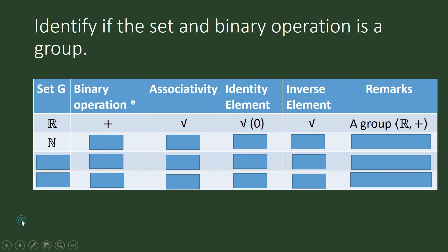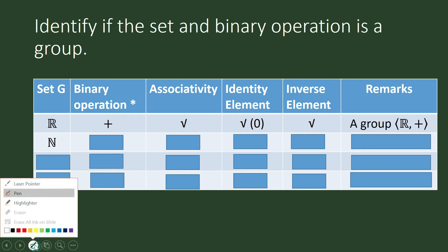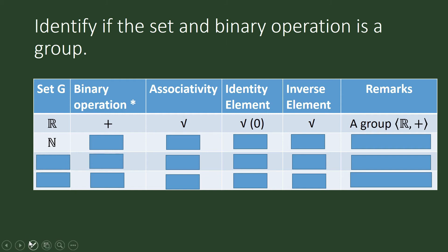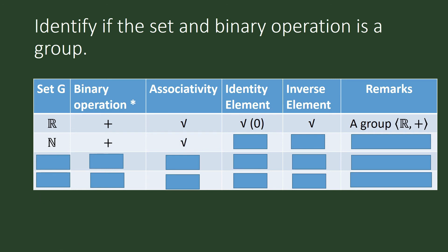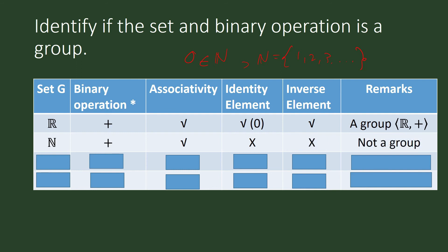How about the set of natural numbers under addition — is it a group? A group is a set and a binary operation. Is addition associative in the set of natural numbers? Yes. Does it have an identity element? No — the identity element for addition is zero, but zero is not in the set of natural numbers. The set of natural numbers begins with one, two, three, and so on — it is the same as the set of positive integers. It also does not have an inverse element, so the set of natural numbers under addition is not a group.